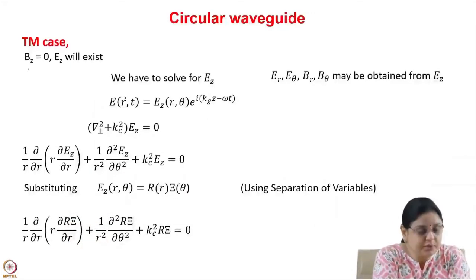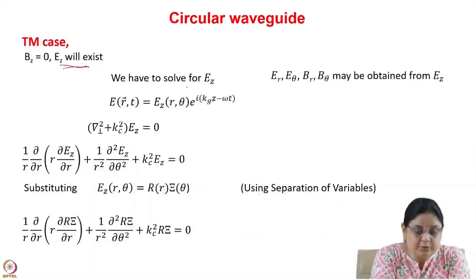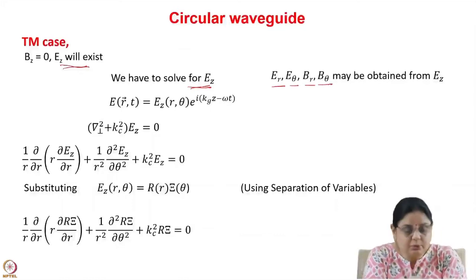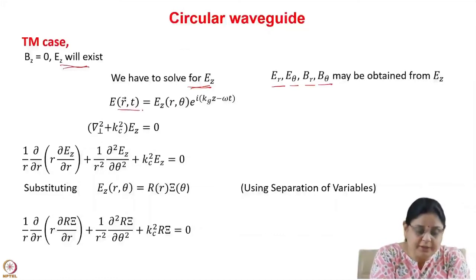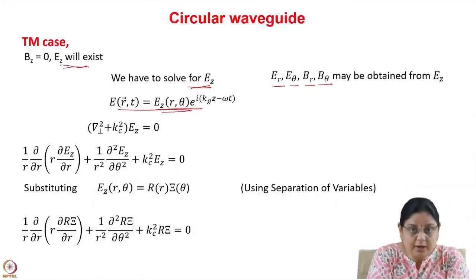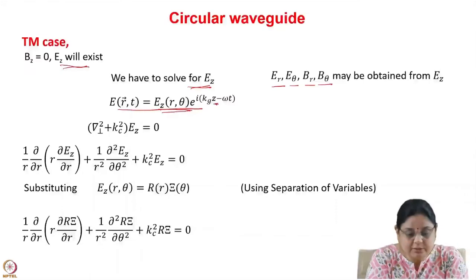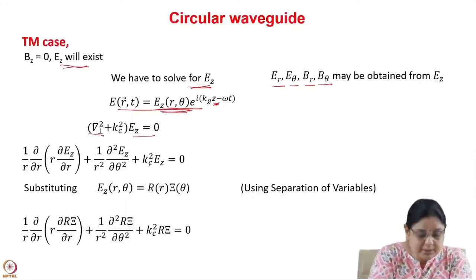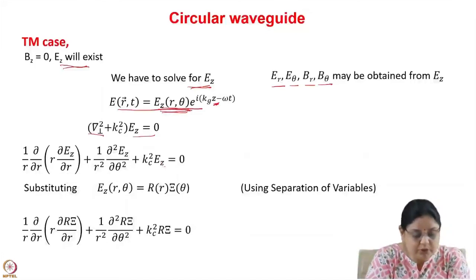For the TM case, Bz equals 0 and Ez will exist. We have to solve for Ez, from which we derive Er, E theta, Br, B theta. The amplitude of Ez depends on r and theta. The wave is free to propagate in the z direction, forming a standing wave in the r and theta directions.